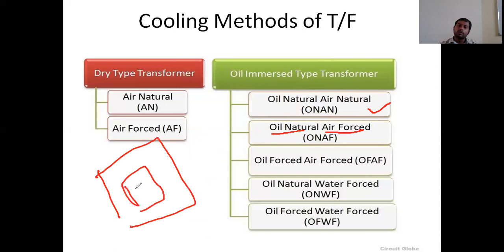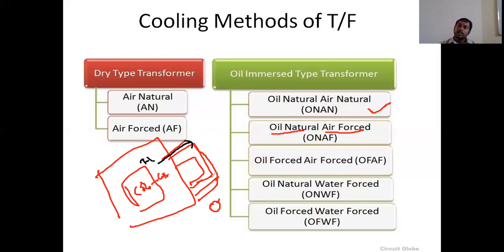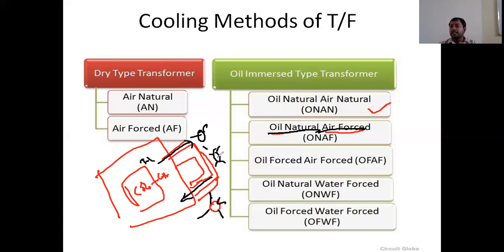In the ONAF system, the transformer tank has the core and winding inside, with outside radiator pipes. Oil naturally flows — high temperature oil flows into the radiators and low temperature oil flows into the transformer naturally. That is why this is called oil natural. Air forced means we need to use separate fans outside the transformer tank connected to the radiators. When the fans are turned on, air is forcibly circulated into the radiators and outside pipes of the radiators, so that the oil temperature reduces very quickly using forced air.